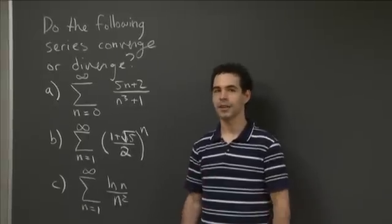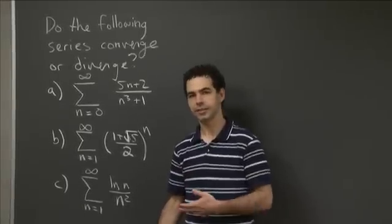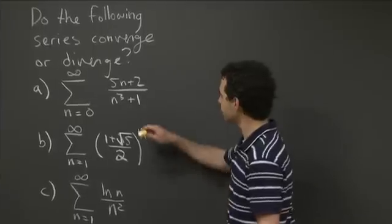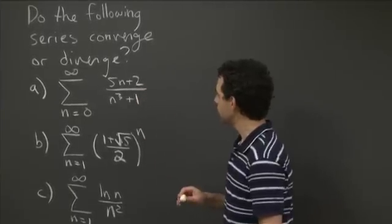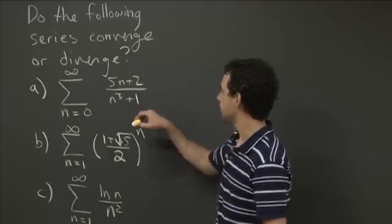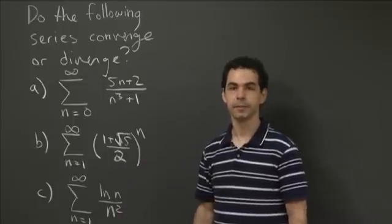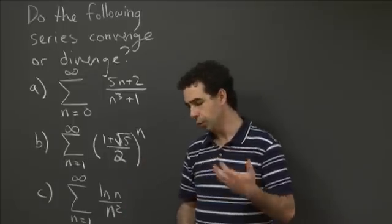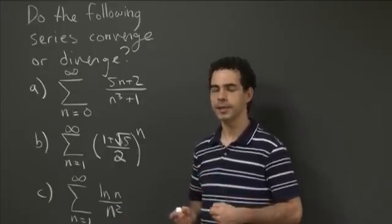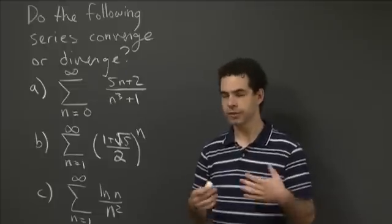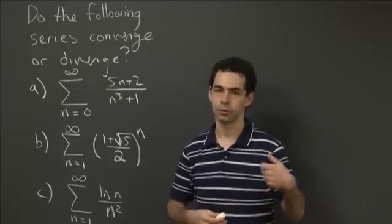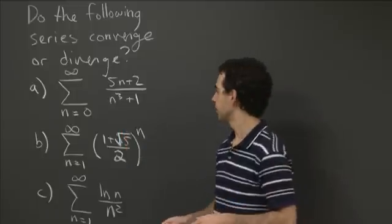Welcome back. Hopefully you had some luck working on these series. Let's talk about how we do them. So the first one: the function we're summing is 5n plus 2 divided by n cubed plus 3. We want to know does that sum as n goes from 1 to infinity converge — does it reach some finite value — or does it diverge, either oscillating or going to infinity?